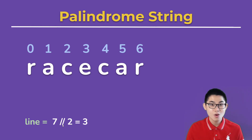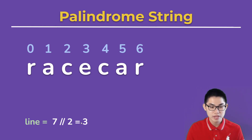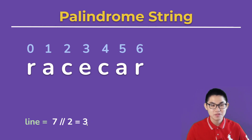Then we floor divide by two. What is floor divide? Seven divided by two gives you 3.5, and 3.5 rounded down gives you three — that's basically what floor divide is. So the length is three, and we're going to put the line onto the first three letters.